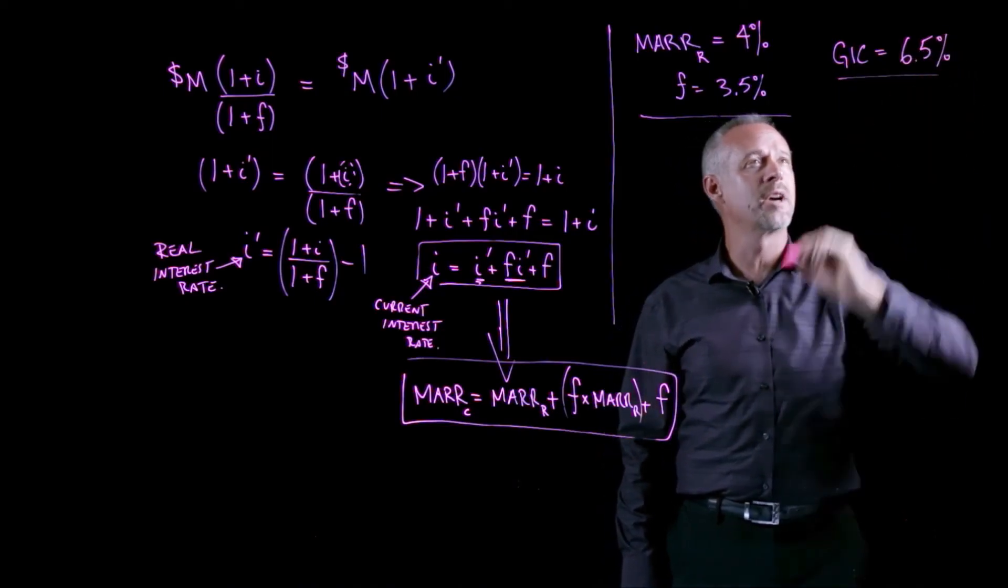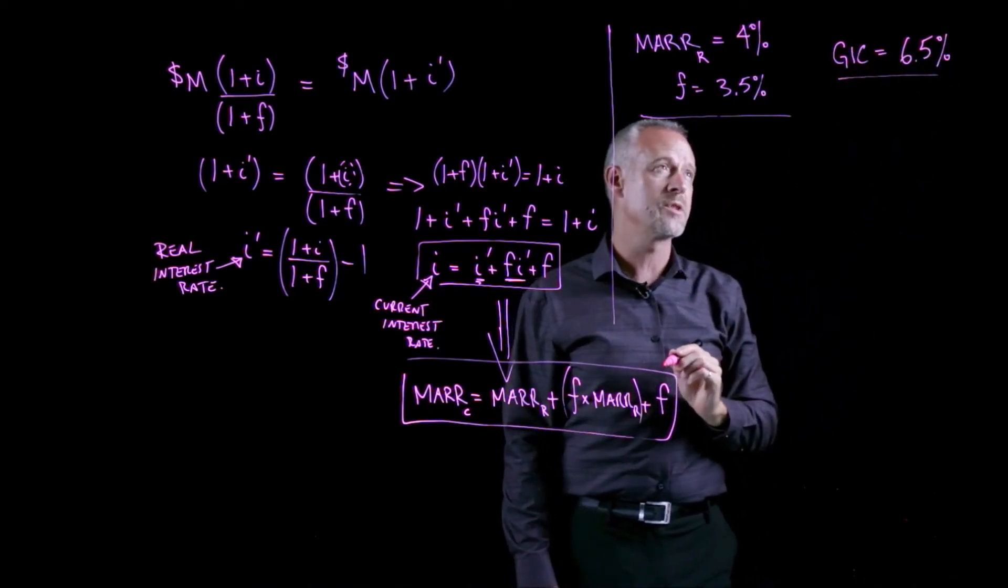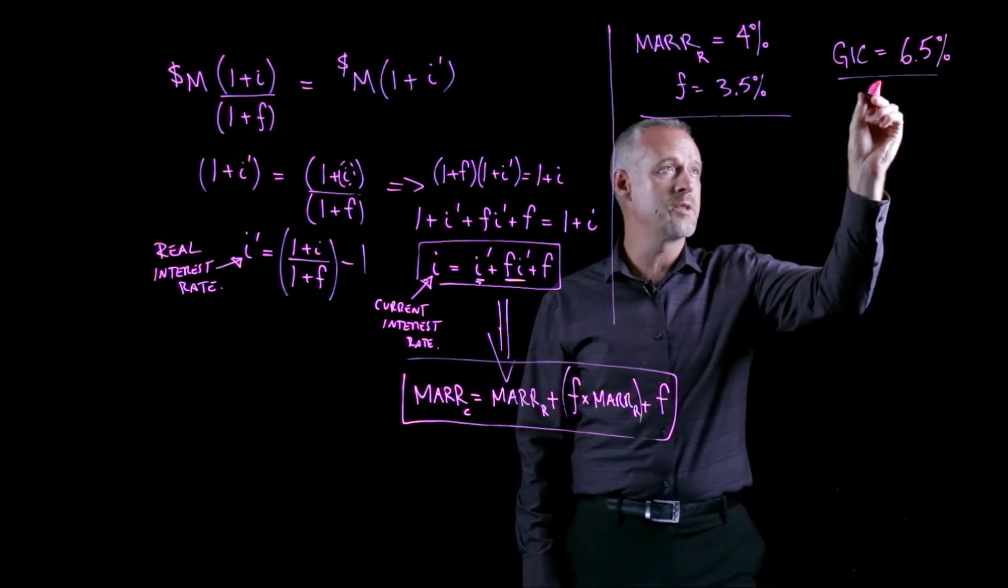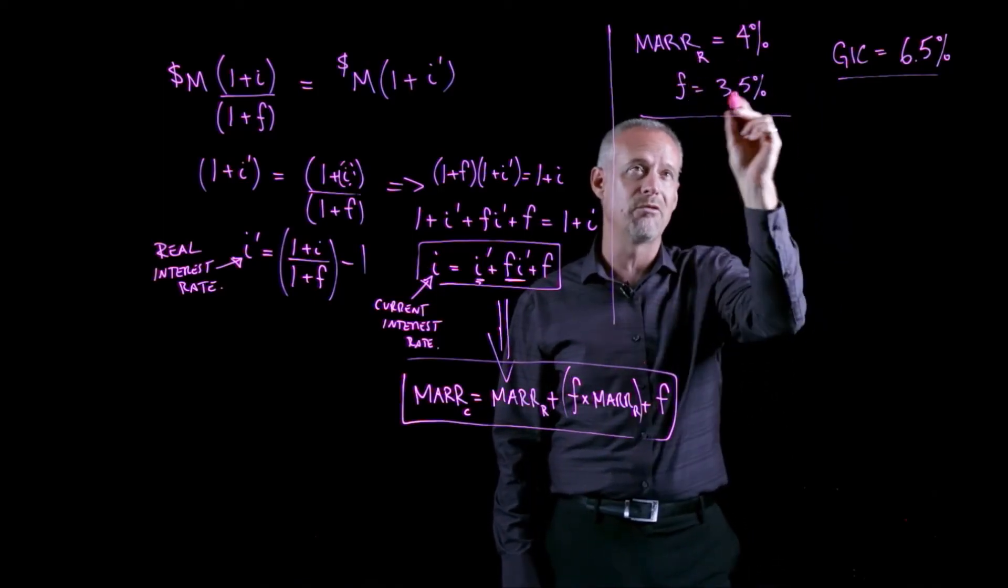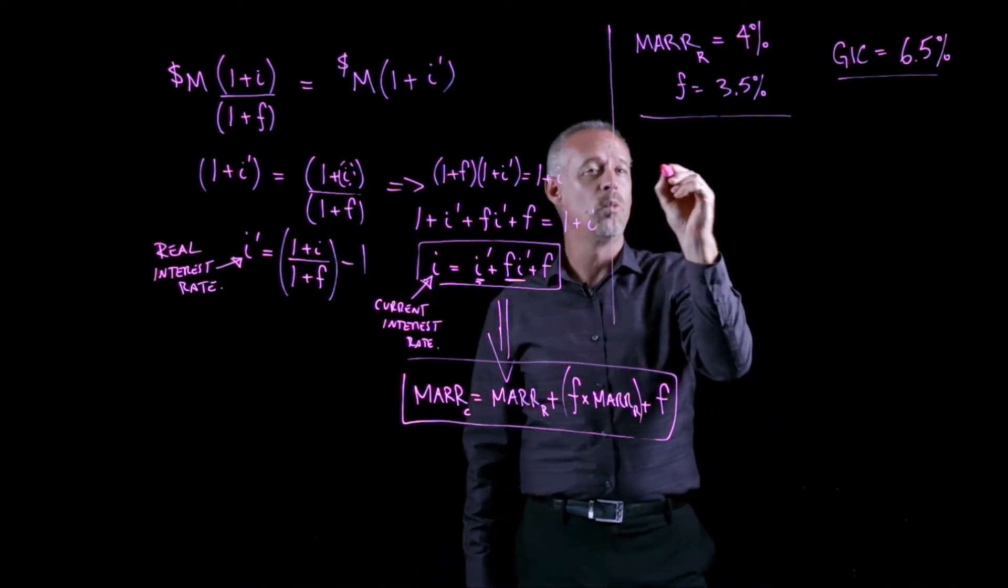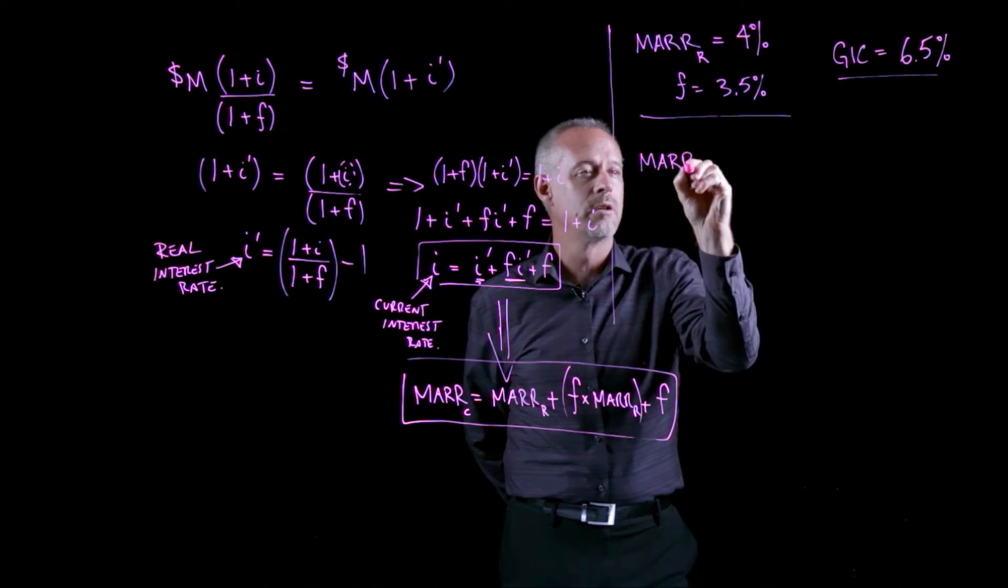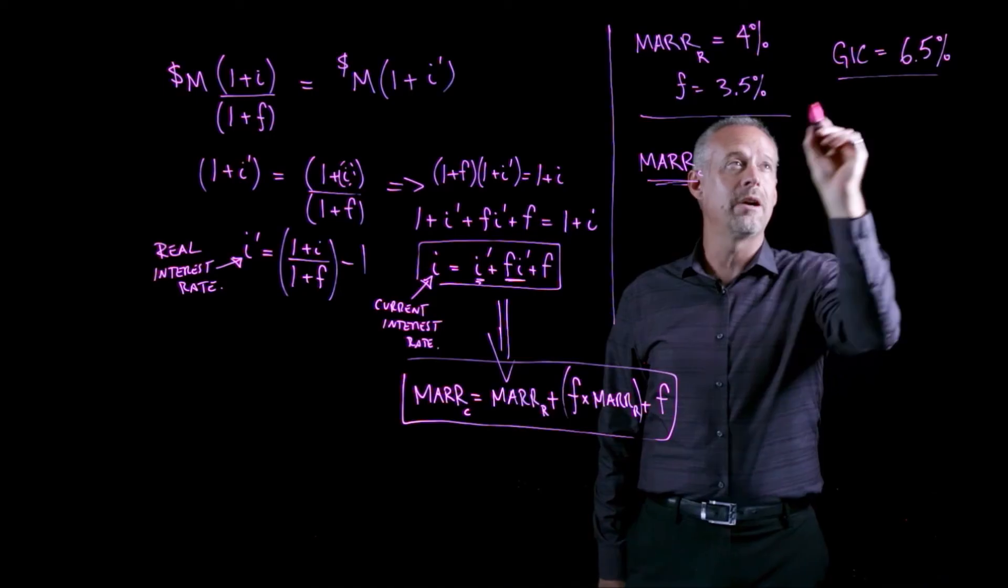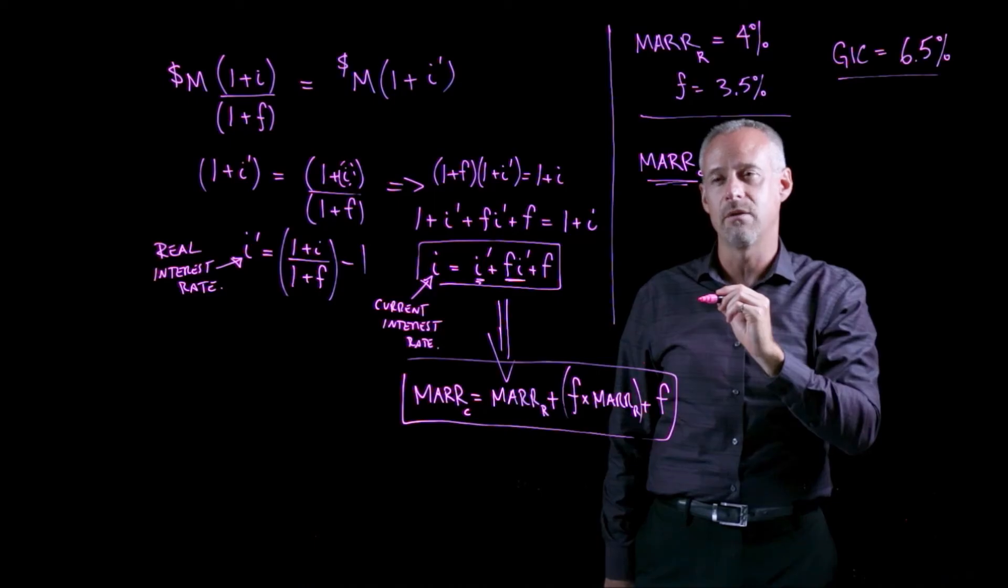So, the bank is advertising this guaranteed investment certificate, GIC. They can earn 6.5%. So, the question becomes, should this person invest the $1,000 in this GIC if they would really like to earn 4% interest after inflation of 3.5%? So, the way to evaluate this, we can calculate the current MARR, that would be the MARR that we could compare to the investment in order to make the decision as to whether or not this investment should be undertaken or not.